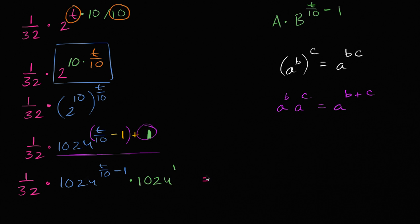We can rewrite this as, we could just bring the 1024, 1024 to the first power, that's just 1024. So that's going to be 1024 over this 32. Over this 32 times, home stretch, times 1024 to the t over 10 minus 1 power.